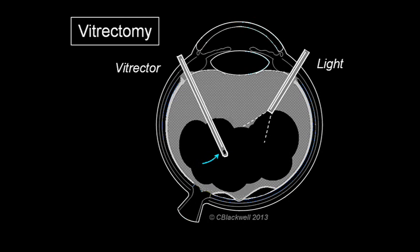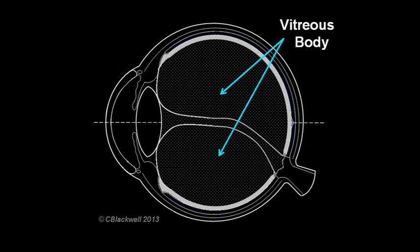Let us begin with some background. The vitreous is the jelly that fills the hollow space in the center of the eye. In the first video, we looked at its structure in some detail.